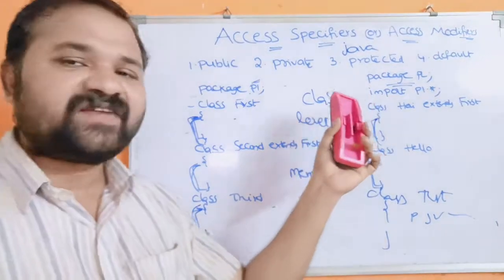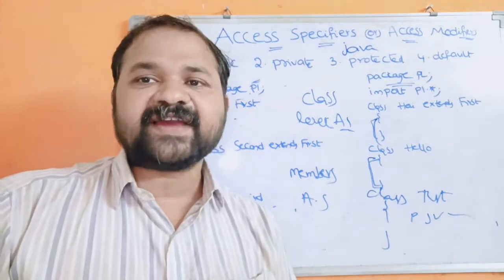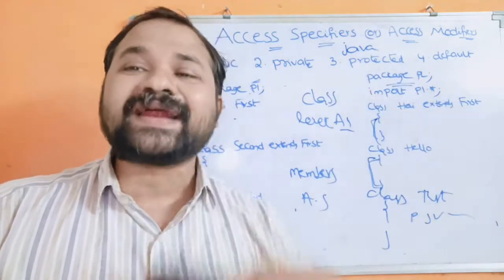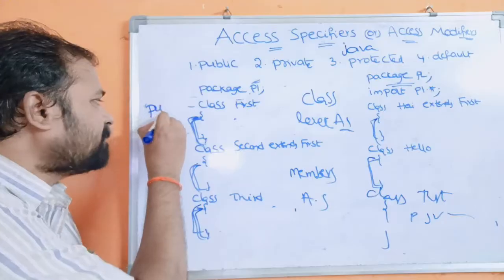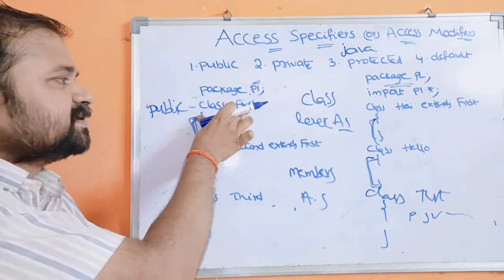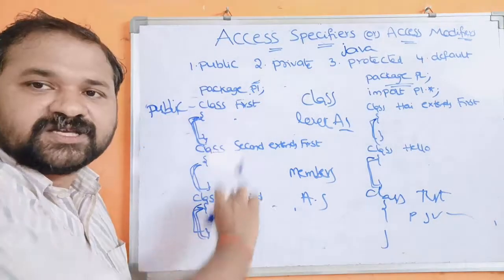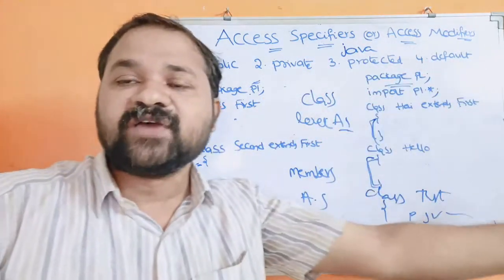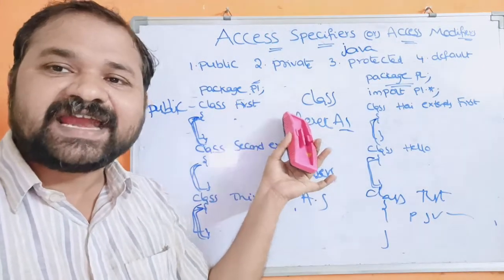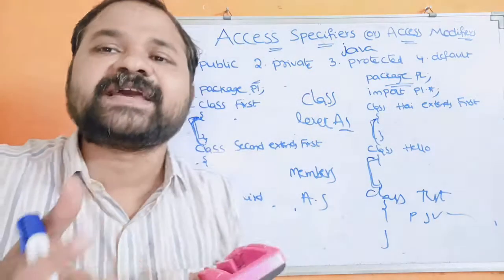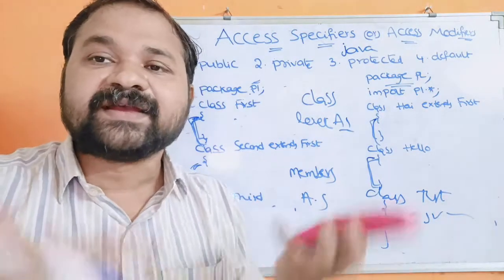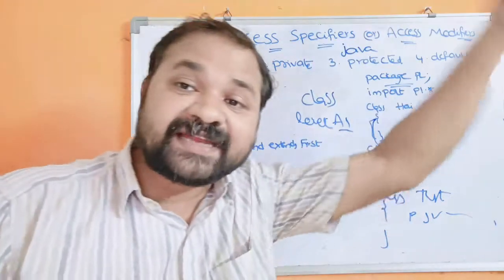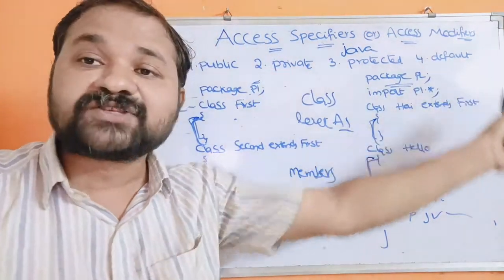Class-level access specifiers are public and default — we can declare a class as either public or default. If we declare a class as public, we can access it from anywhere in this program or from outside this package also. Public means it is accessible to everyone — any class in the program can access it, including from outside this package.